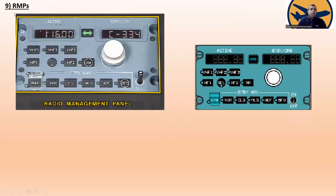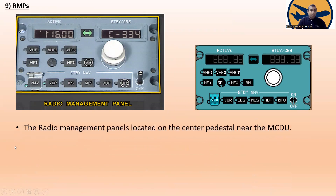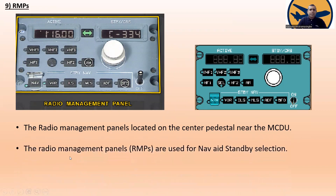Number nine: RMP — Radio Management Panel. Here you can see the radio management panel with active frequency, standby frequency, HF1, HF2, VHF, ILS, VOR, ADF, and BFO selections. The radio management panel is located on the center pedestal near the MCDU. The radio management panels are used for nav aid standby selection.